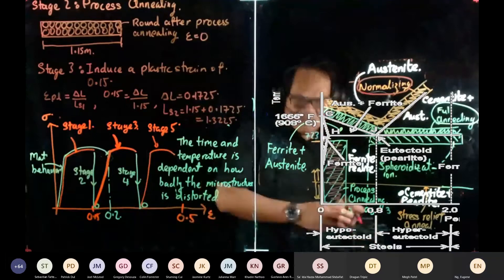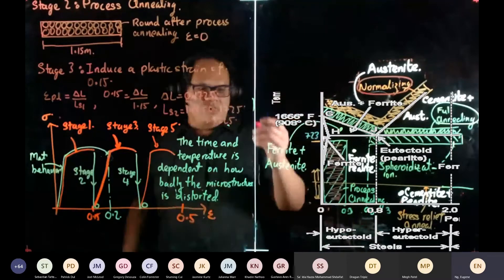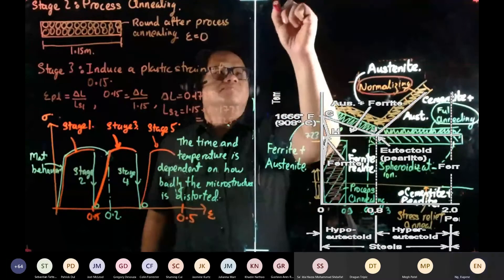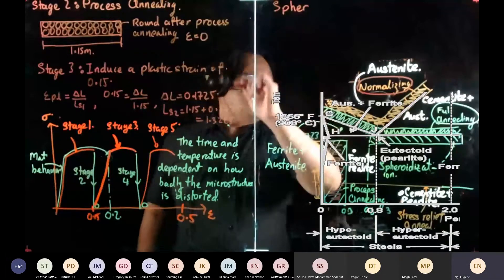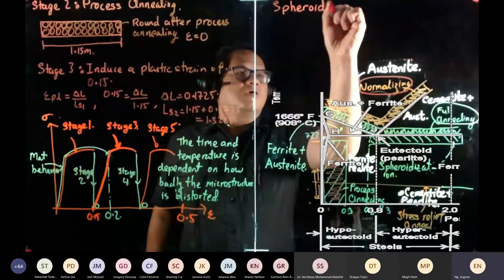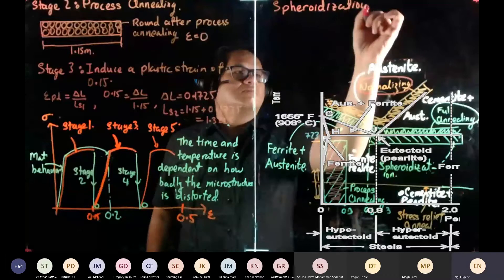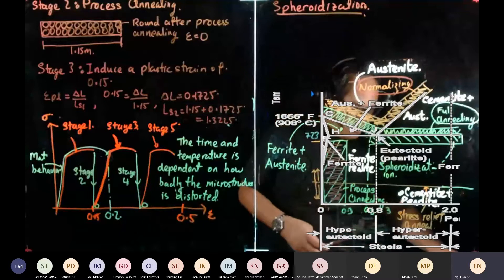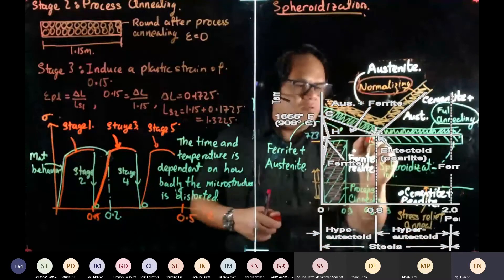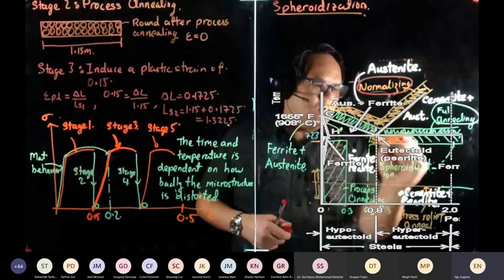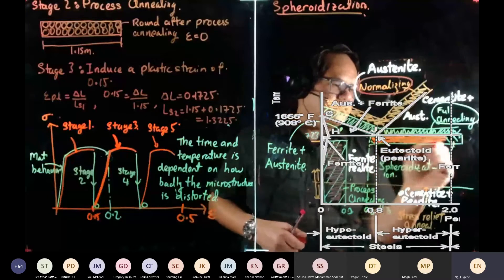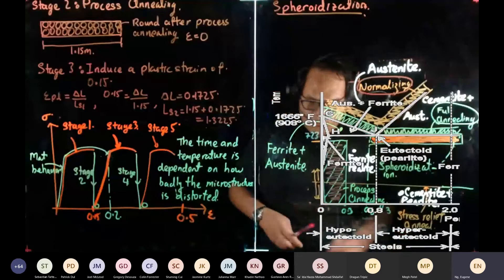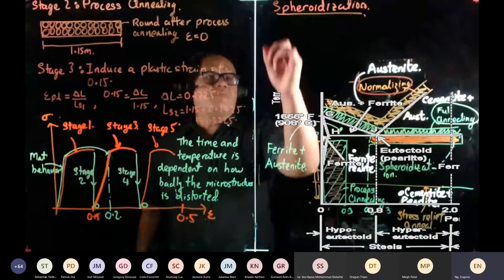The next topic is spheroidization. Spheroidization applies to the region greater than 0.6 carbon content on the phase diagram. This is the area where we carry out spheroidization.